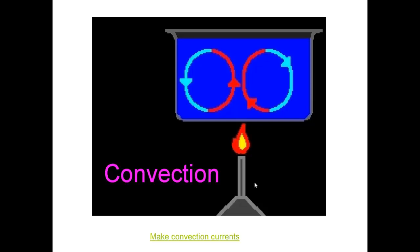Wind occurs as air moves from a place of high air pressure to a place of low air pressure.